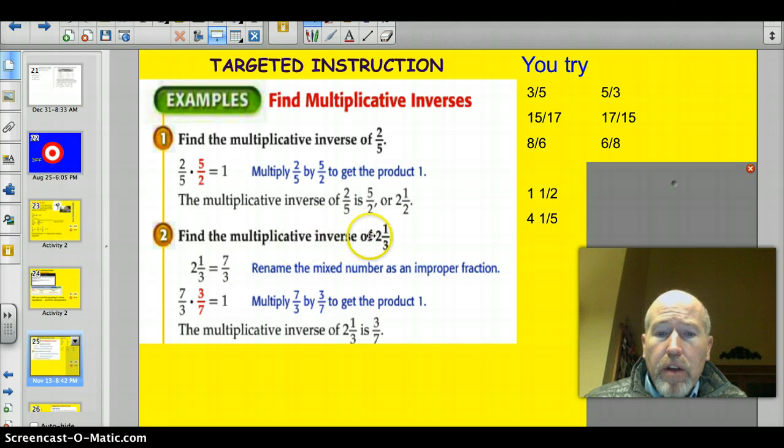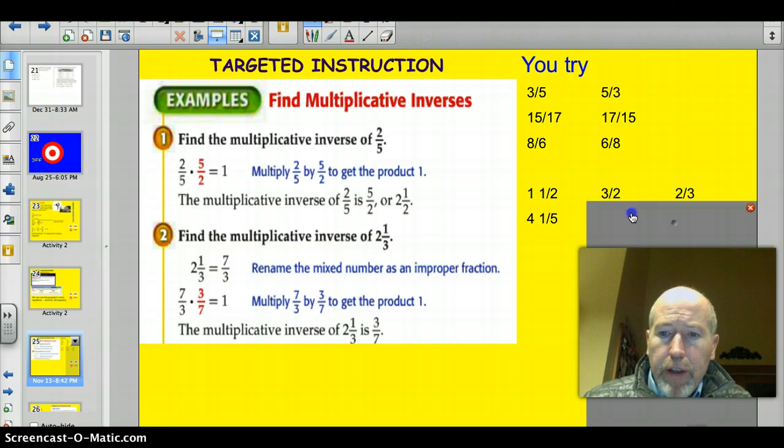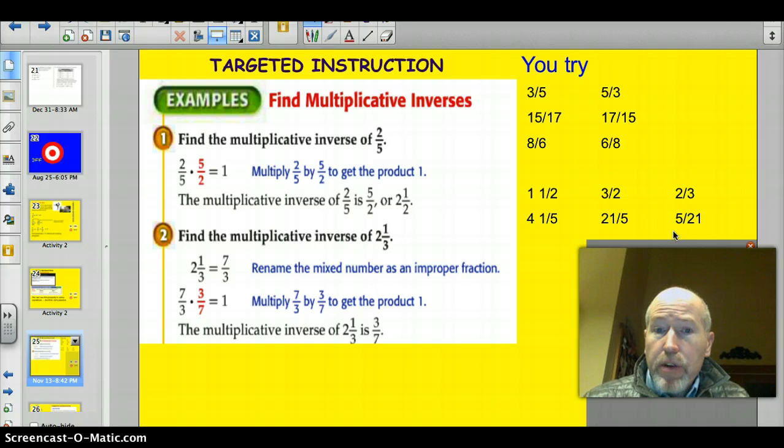So these are a little more complicated. Finding the multiplicative inverse of 2 and 1/3. You just take and make it into an improper fraction. So 2 times 3 is 6 plus 1 is 7/3. And then flip it. 7/3, flip it to 3/7. And you'll get a product of 1. Try this, 1 and 1/2. It becomes 3/2. That's the improper fraction. Did you remember to flip it though? Remember to flip. Same thing here. 4 times 5 is 20 plus 1 is 21/5. But did you flip it to get the multiplicative inverse?